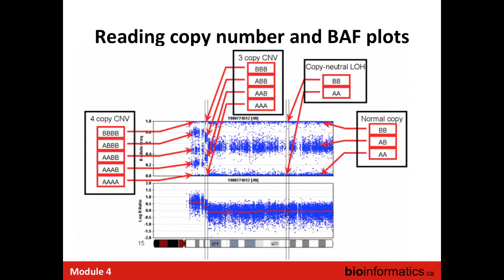Question: how do you know it's not a third allele like ABC? Most positions used for this kind of analysis are heterozygous in the germline of the person or in populations. Most SNPs have a major and a minor allele. When we talk about how SNPs are chosen for, say, the Affymetrix SNP-6 array, they're chosen to be biallelic—so we usually just have two alleles of interest at a particular position.